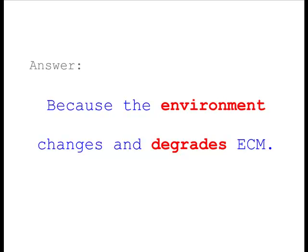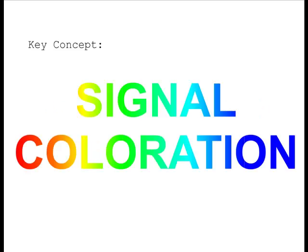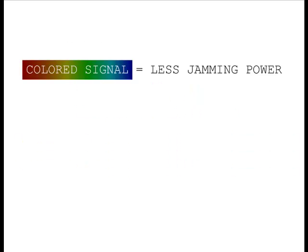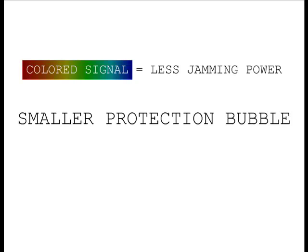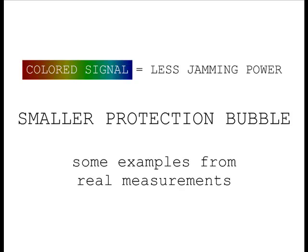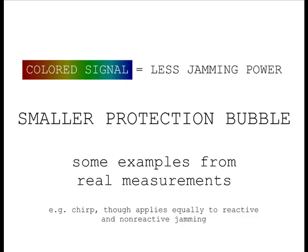A key concept to understanding this is signal coloration. Signal coloration means that there is less jamming power than you thought, which means that the ECM protection bubble is smaller than you thought. I'll explain this by using some examples from real measurements to show that this is a bona fide phenomenon, and I'll frame it in terms of a signal called a chirp, although the discussion applies equally to reactive and non-reactive jamming.